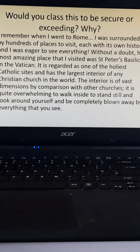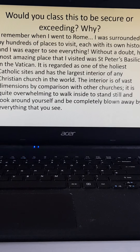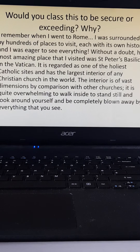Let's look at this one — secure or exceeding, and why? 'I remember when I went to Rome… I was surrounded by hundreds of places to visit, each with its own history, and I was eager to see everything! Without a doubt, the most amazing place that I visited was Saint Peter's Basilica in the Vatican. It's regarded as one of the holiest Catholic sites and has the largest interior of any Christian church in the world. The interior is of vast dimensions by comparison with other churches; it's quite overwhelming to walk inside, to stand still, look around yourself, and be completely blown away by everything that you see.'